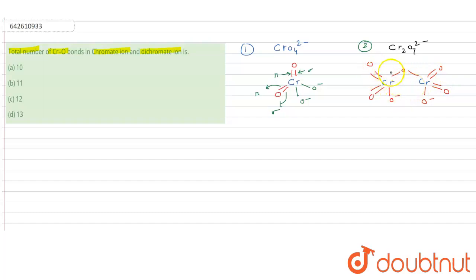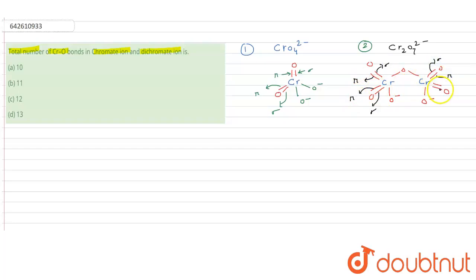In the dichromate ion structure, each Cr-O double bond consists of one sigma bond and one pi bond. Similarly, the single bond Cr-O linkages also contribute sigma bonds. All Cr-O connections in the dichromate ion can be identified as either sigma or sigma-plus-pi bond pairs.